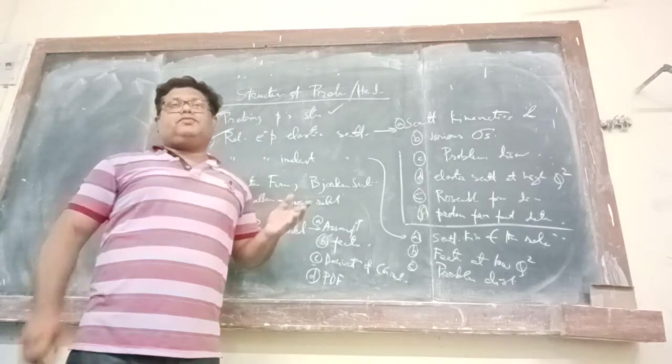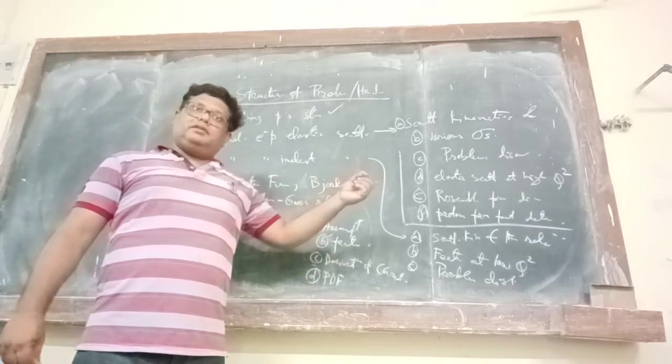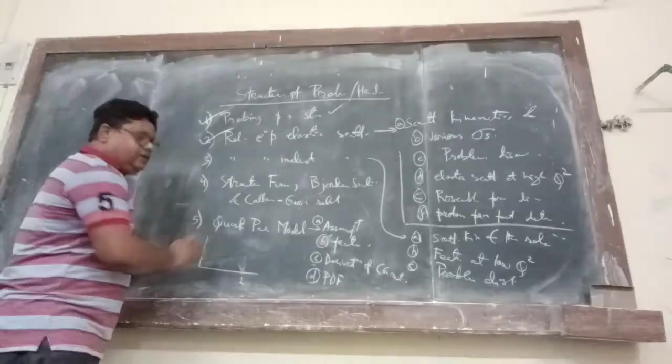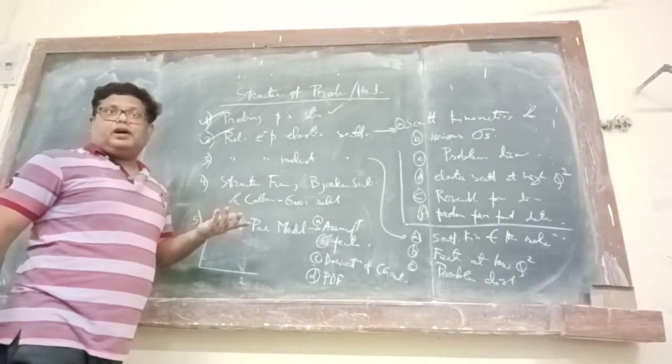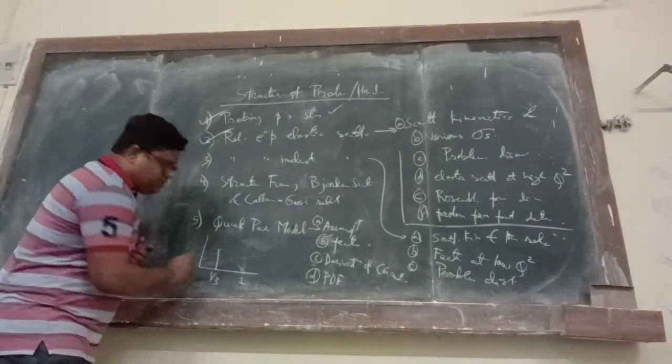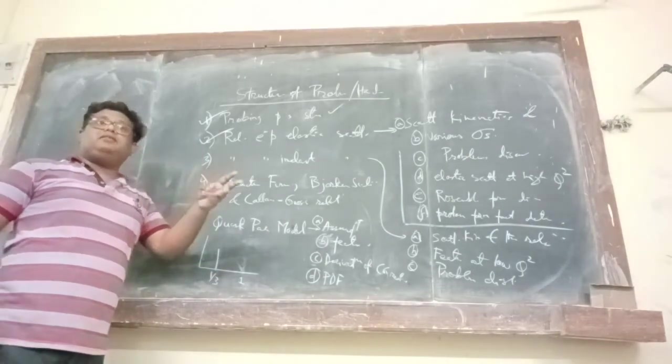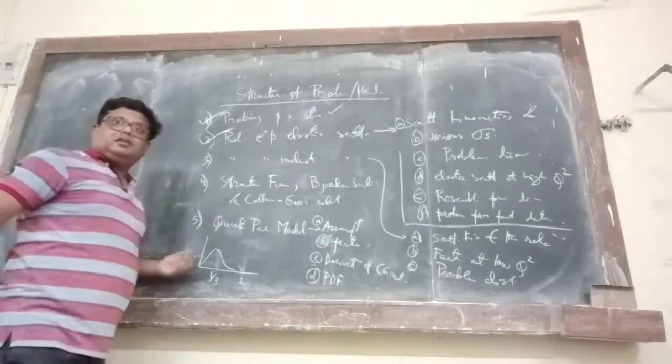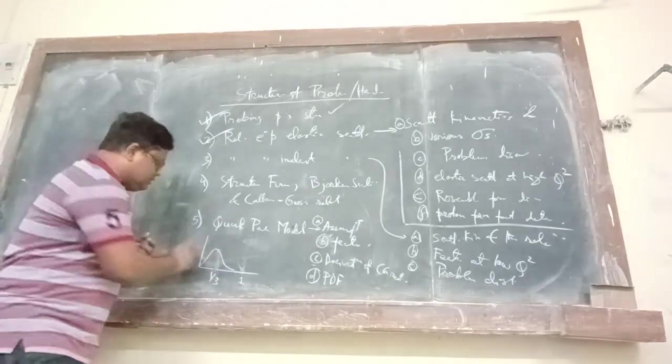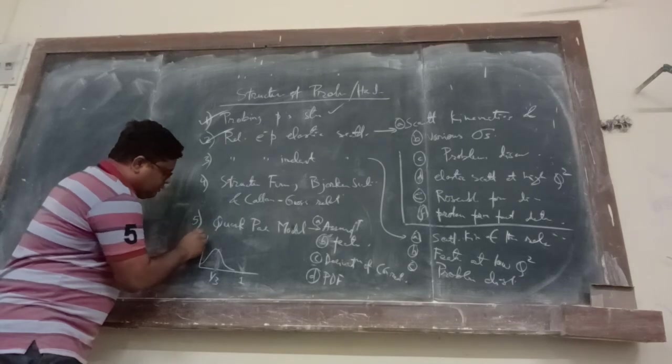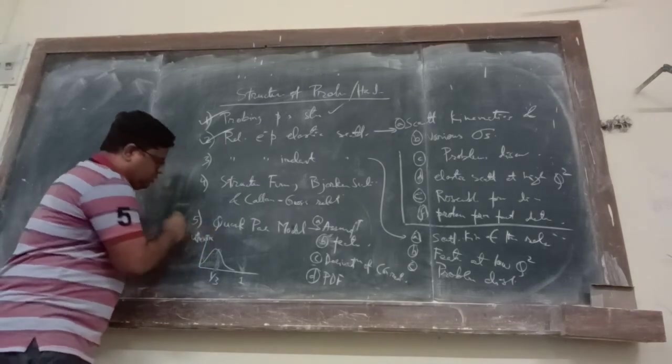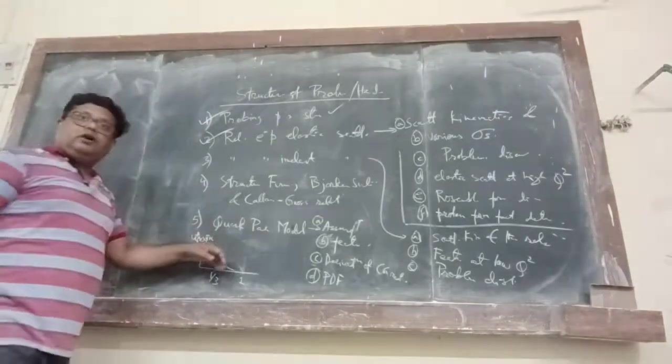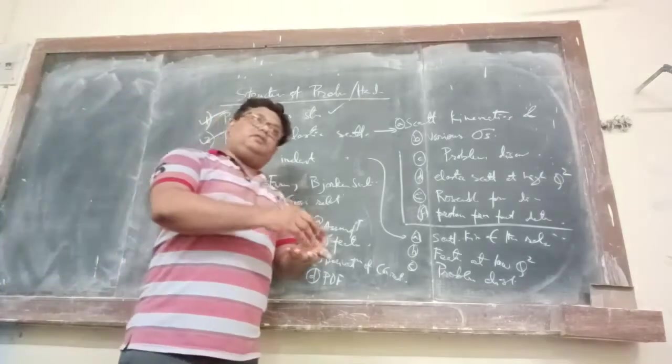So, parton distribution functions, single proton, it looks like a delta function. Only one. Now, if we are considering three valence quarks inside the proton, then it will be at 1 by 3. And then, if the three valence quarks interact among themselves, then we will see a distribution. U of x del x proton upquark distribution. Up till now we are still talking about valence quarks and interaction between them.